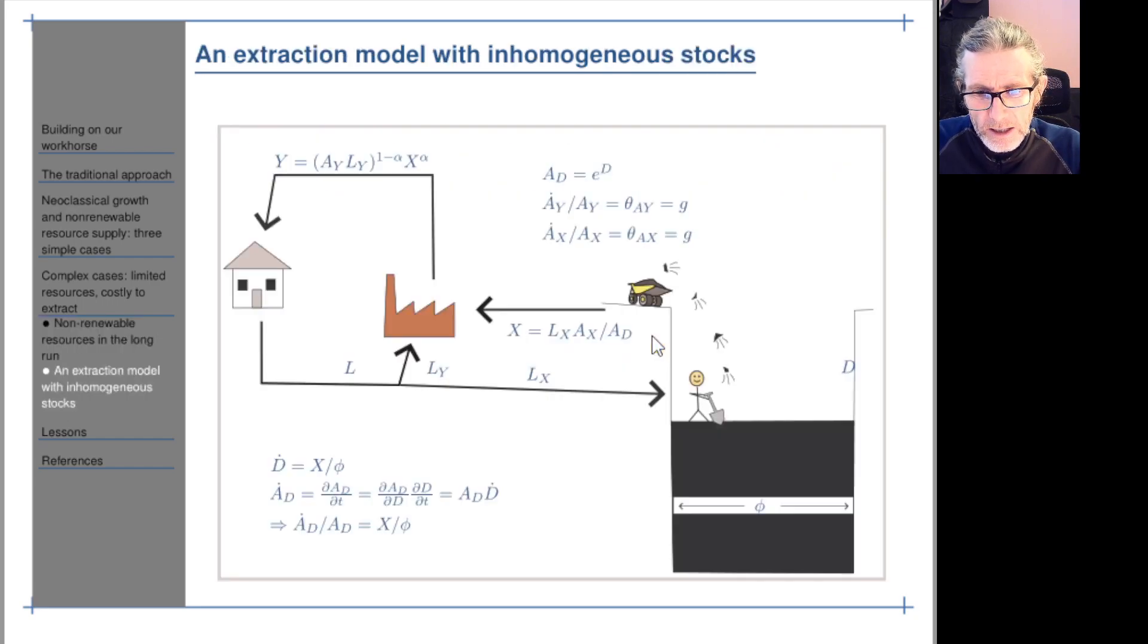So here is the model. What's going on here? We've got final good production is A-Y L-Y, so this is effective labour inputs, to the power of 1 minus alpha, times the resource flow to the alpha. We've dropped capital. Since we're always looking at balanced growth paths anyway, capital doesn't make much difference.